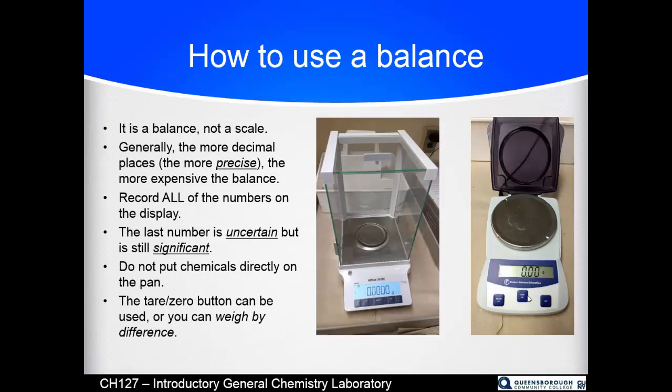A balance is just that. A balance and not a scale. A scale measures weight. Balance is a precision mass measuring device. We say weigh all the time just because it's harder to say obtain the mass of something. Mass is not a verb. Weigh you can use as a verb. We always mean obtain the mass. As a rule, the more precise, the more decimal places your balance gives you, the more expensive it is. The balance on the right with only two decimal places costs about 200 bucks. The balance on the left with four decimal places costs about 1200 bucks.